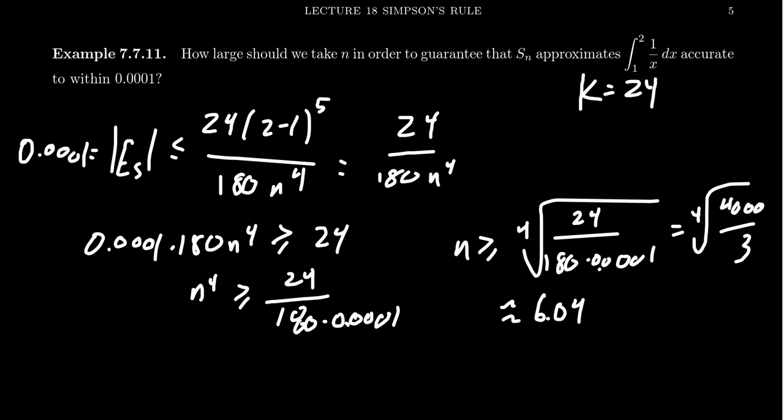That's the estimate we'll get right here. In order to be accurate to 4 decimal places, we need that N is greater than or equal to 6.04. So we have to round this up. But we don't round this up to the nearest integer. We have to round this up to the nearest even integer. So our answer is that we need to choose N to be greater than or equal to 8. Because we can't have 0.04 of a subdivision. It has to be a whole number. So we have to take the next number. But 7 is incompatible for Simpson's rule. We can't do that with 7. So we have to go up to 8. So 8 is the number we're looking for here.